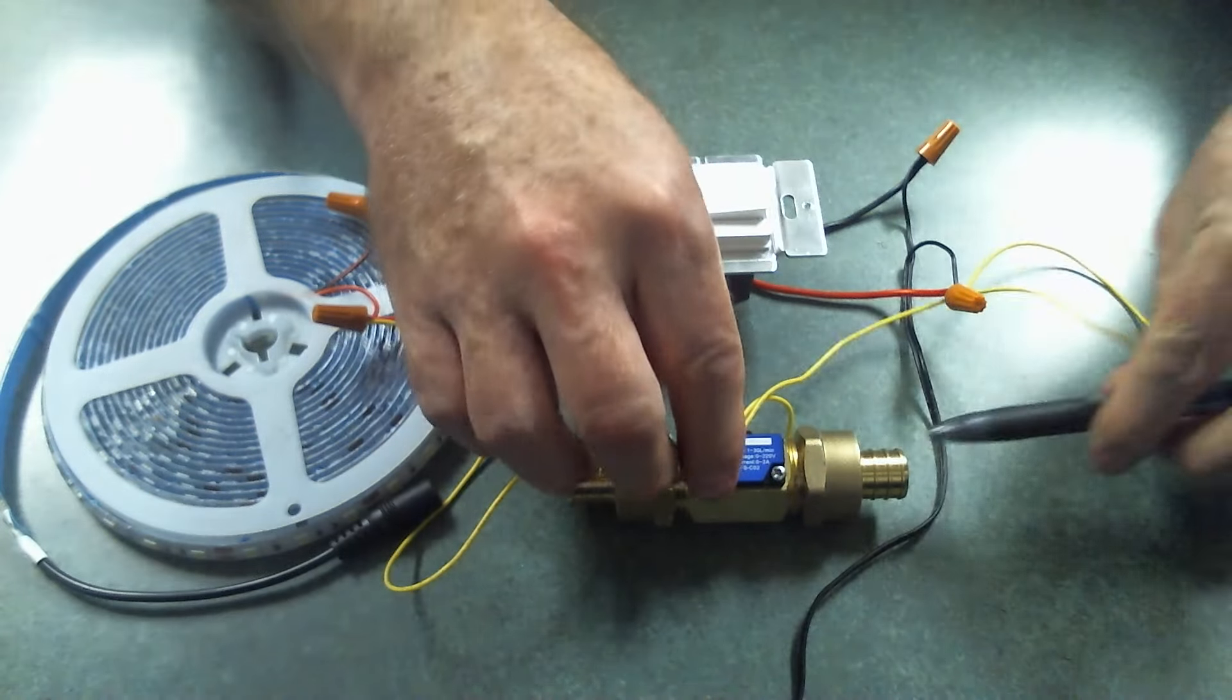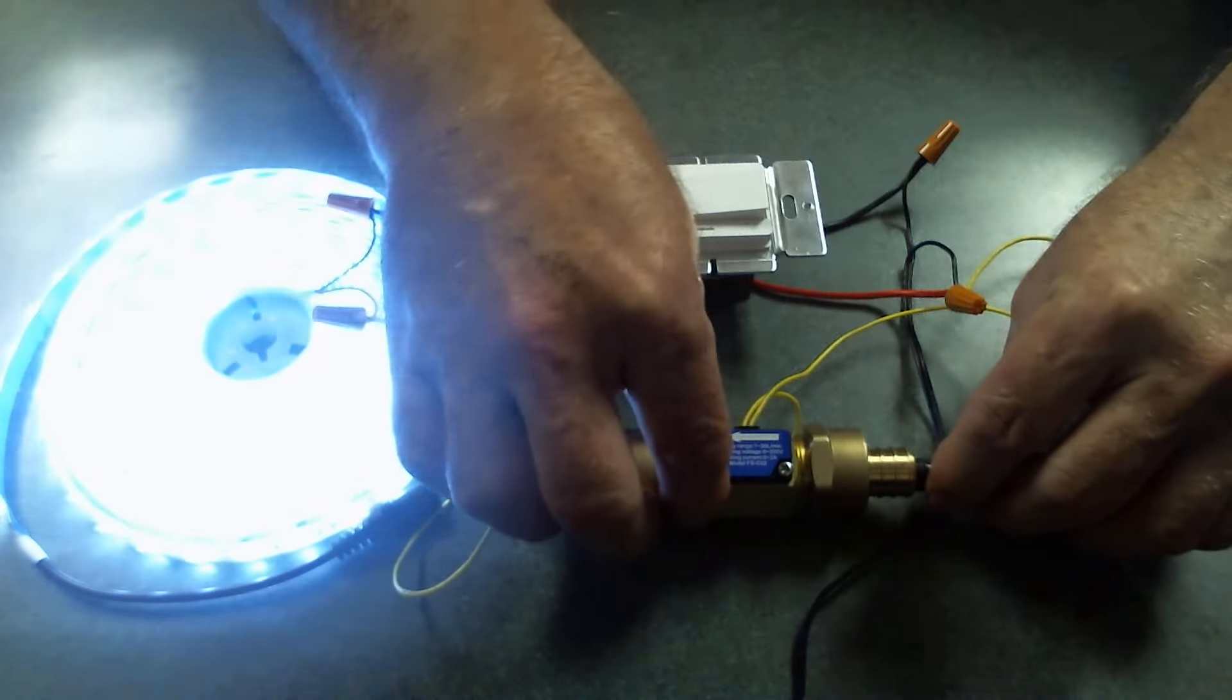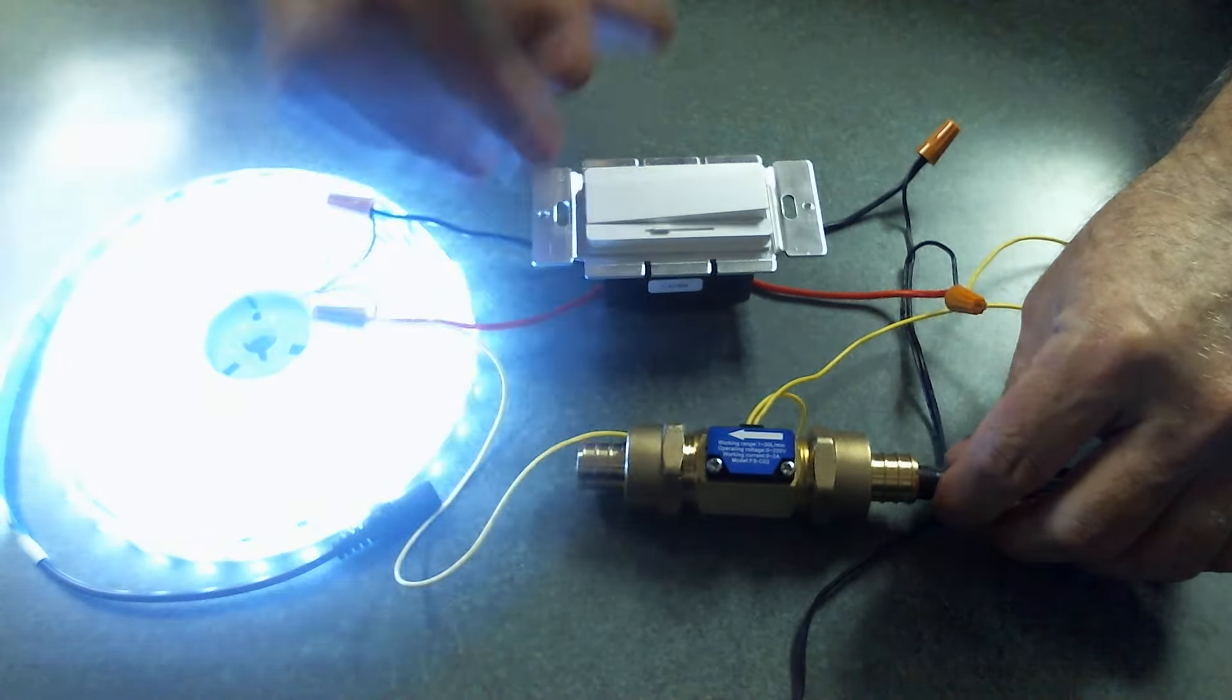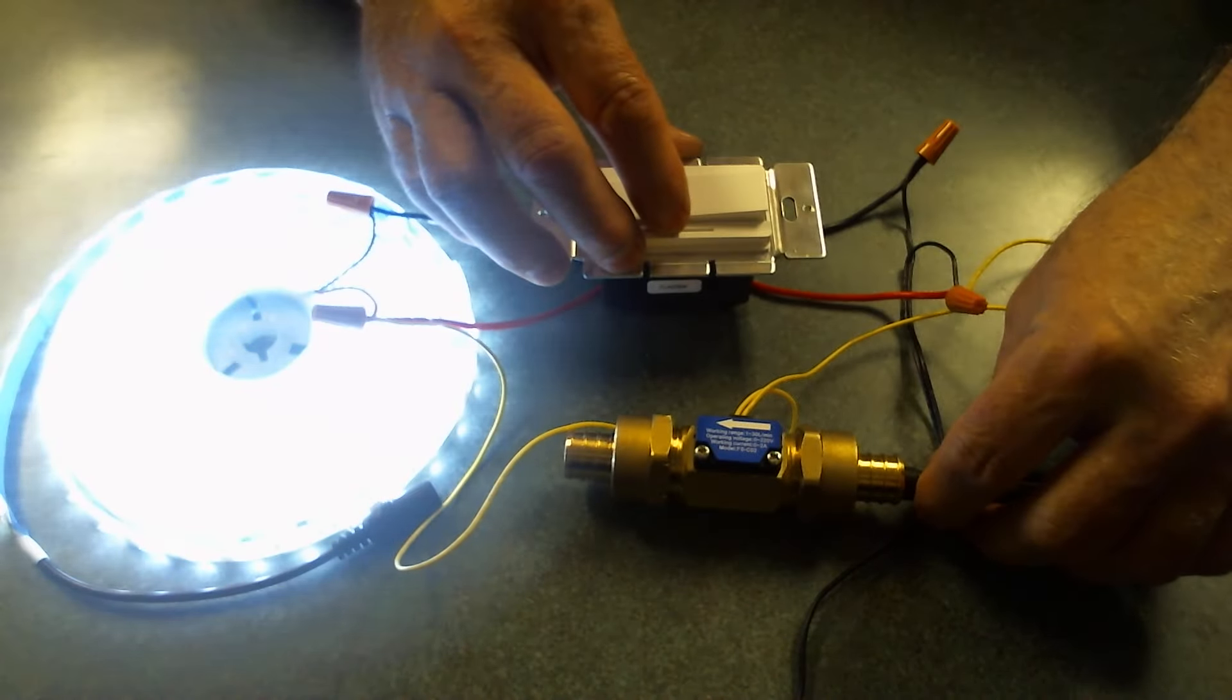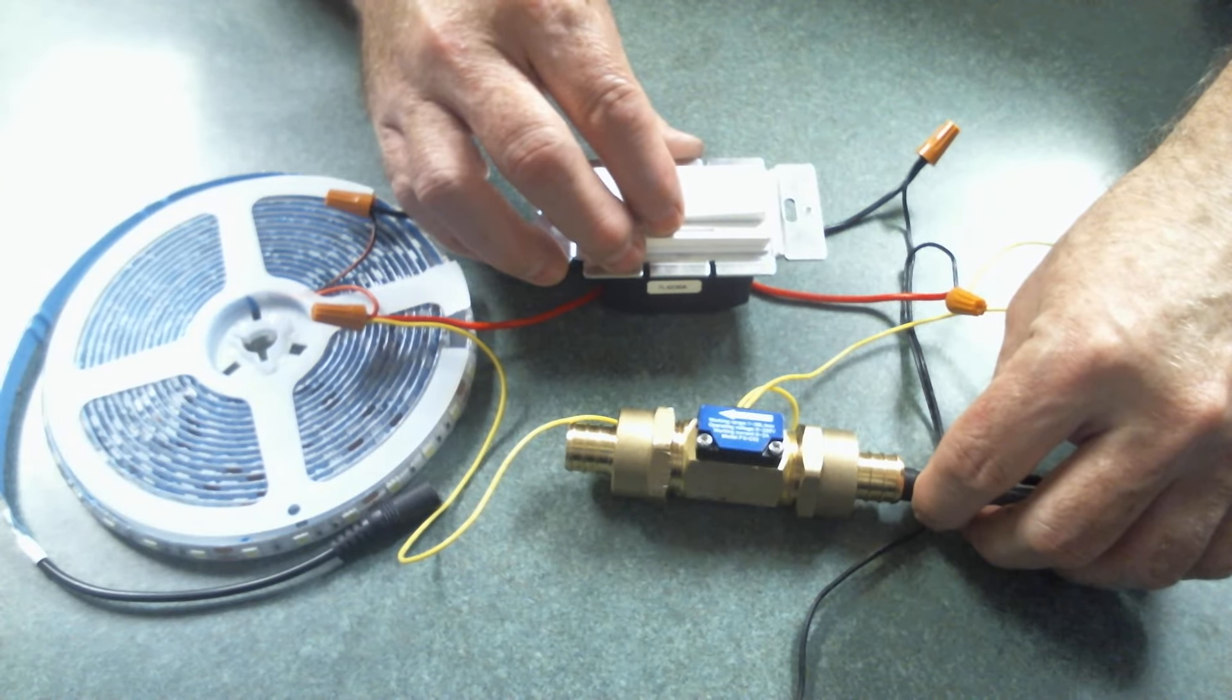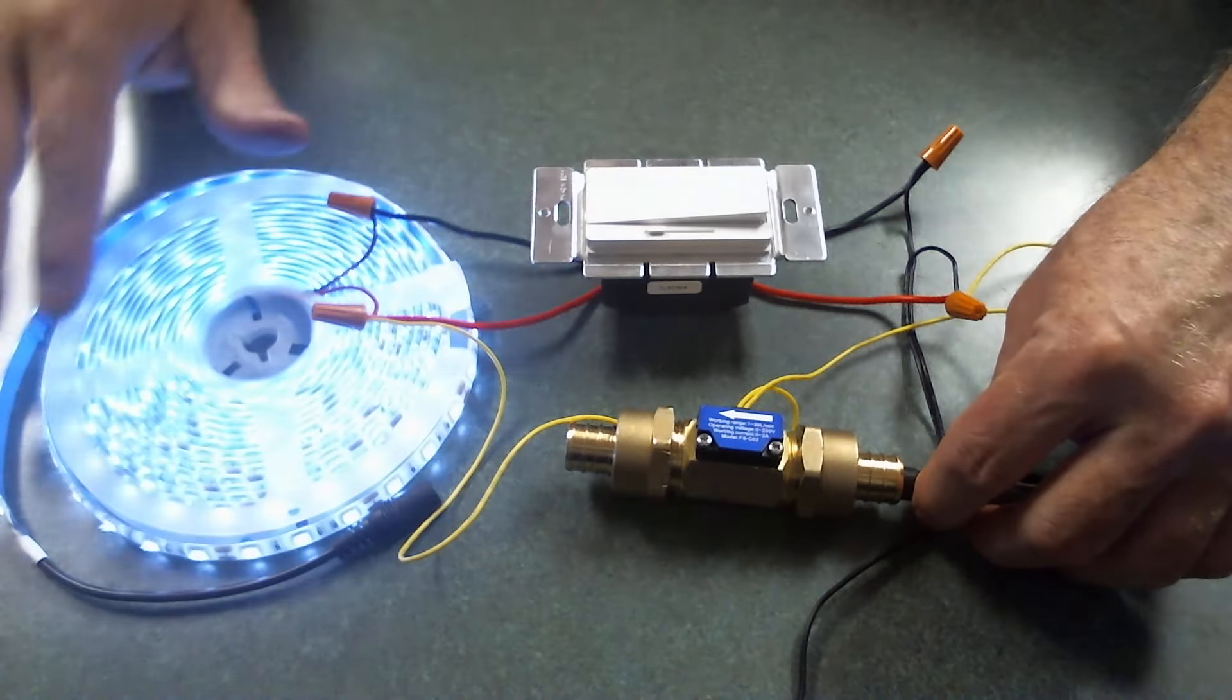We have our flow switch. Flow switch comes on. Lights come on. Also, you'll note that the dimmer controls the light.